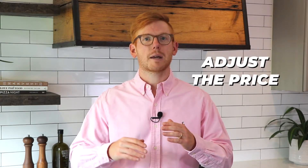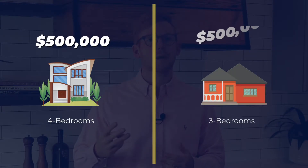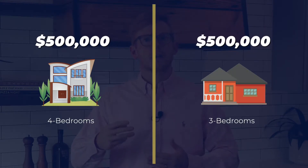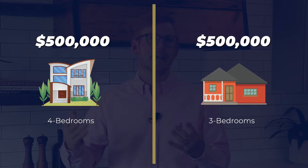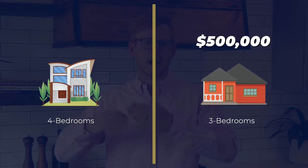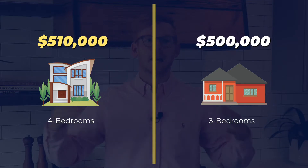Once you do that, you determine the most comparable properties that have sold recently. Then, you adjust their price based on the characteristics of the home. Say the subject property has four bedrooms, but the other comparable home has three bedrooms. You're going to add value to that comparable home — say $10,000 — you're going to add it onto the price because we're trying to normalize every single home.